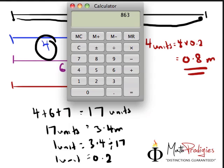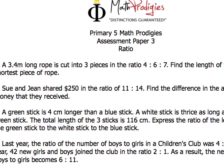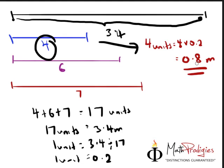So in other words, these pieces of rope are in the ratio of 4, 6 to 7. Therefore, the shortest piece is 4 and hence the answer is 0.8. So we are correct. If you got that right, high five. You are a math prodigy. Good job.